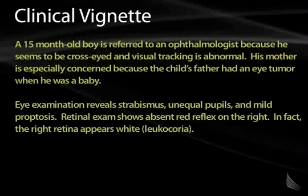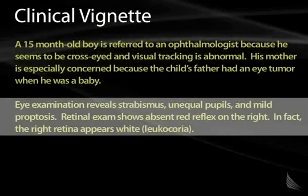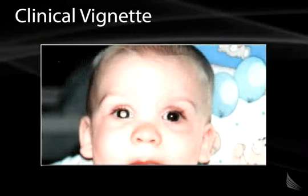Defects in the RB and P53 proteins are illustrated in the following clinical vignette. A 15-month-old boy is referred to an ophthalmologist because he seems cross-eyed and his visual tracking is abnormal. His mother is concerned because the child's father had an eye tumor removed when he was a baby. Examination reveals strabismus, unequal pupils, and mild proptosis. A retinal exam shows absent red reflex on the right side, and the right retina appears white — a condition called leukocoria.